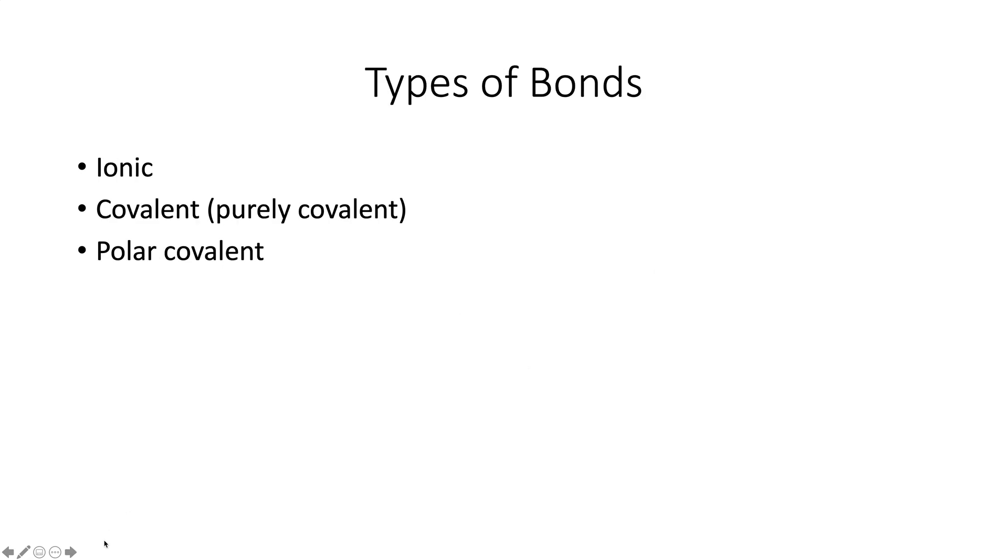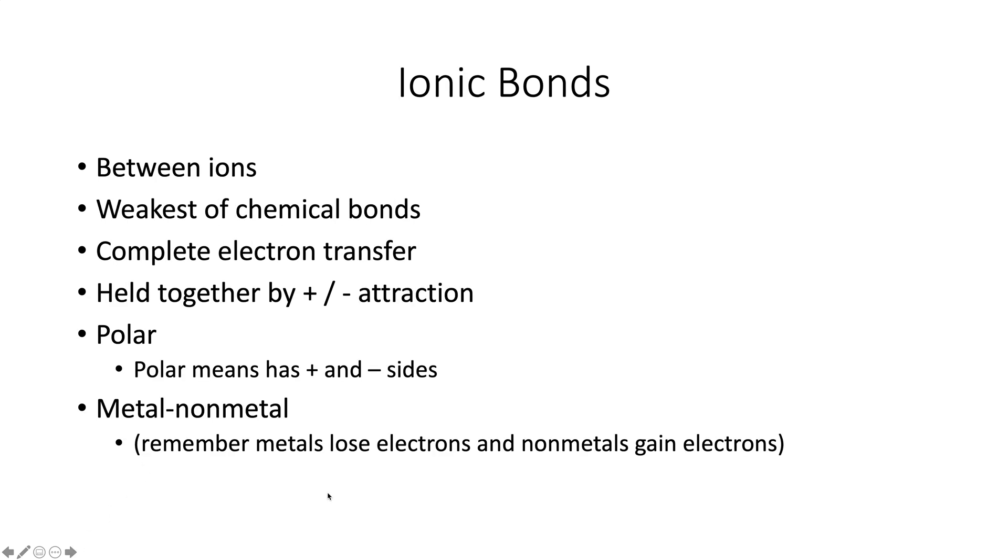Basically, there's three types of chemical bonds: ionic, covalent—I call it purely covalent, the textbook is going to say covalent—and polar covalent. Ionic bonds are between ions. They're the weakest of chemical bonds. They involve complete electron transfer. They're held together just by the plus minus attraction. They are polar, and that's a word we haven't used before. Polar means there's a positive and a negative side. Typically, they're between a metal and a nonmetal. Remember, metals lose electrons, nonmetals gain them. That's where you get the charges.